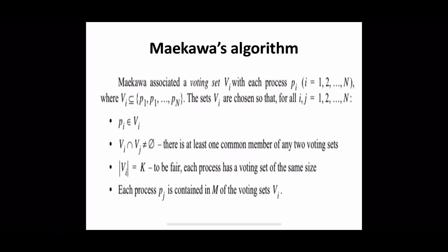The length of the voting set is equal to k and should be a fair number — each process has a voting set of the same size. We will see later how the number will be selected. Also, each process Pj is contained in m of the voting sets Vi, meaning each process should be a member of m different voting sets. These are the main conditions to be met in Maekawa's voting algorithm.